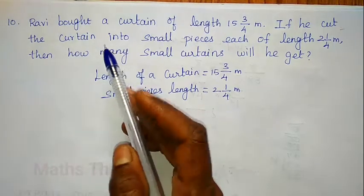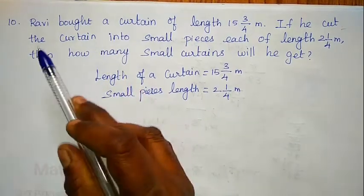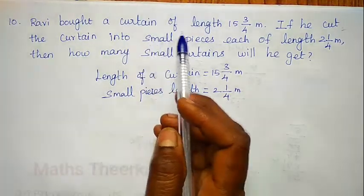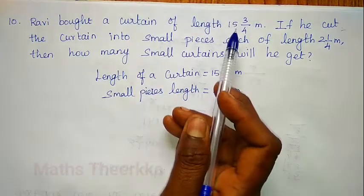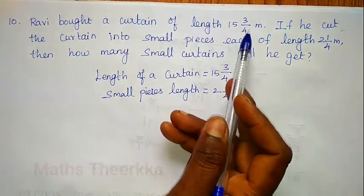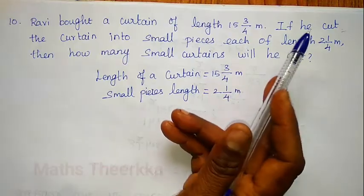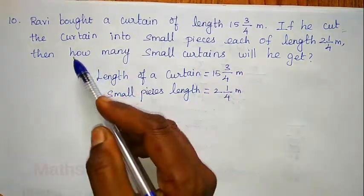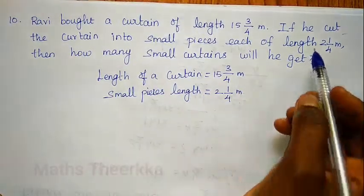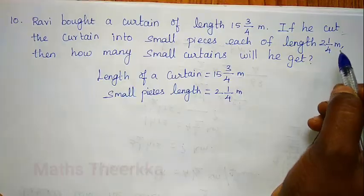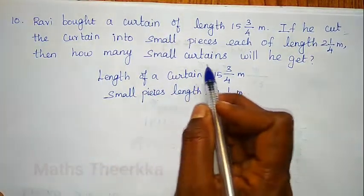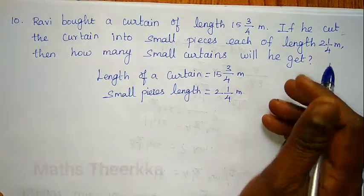Next problem 1.1.10. Ravi bought a curtain of length 15 and 3/4 meters. If he cuts the curtain into small pieces, each of length 2 and 1/4 meters, how many small curtains will he get?